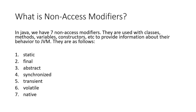In Java we have seven non-access modifiers. They are used in classes, methods, variables, constructors, etc. to provide information about their behavior to the JVM. The modifiers are: static, final, abstract, synchronized, transient, volatile, and native. In the next video we will learn them one by one. Thank you.